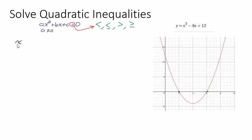Let's remember finding x-intercepts. Here's the quadratic: x squared minus 8x plus 12 equal zero. You can tell from the graph that this equals zero — this is your y value. When you plug x squared minus 8x plus 12 in, that gives you your y value. So we're asking when is the y value equal to zero. We can see it's going to be right here at 2 and right here at 6. That's x equals 2 and x equals 6.